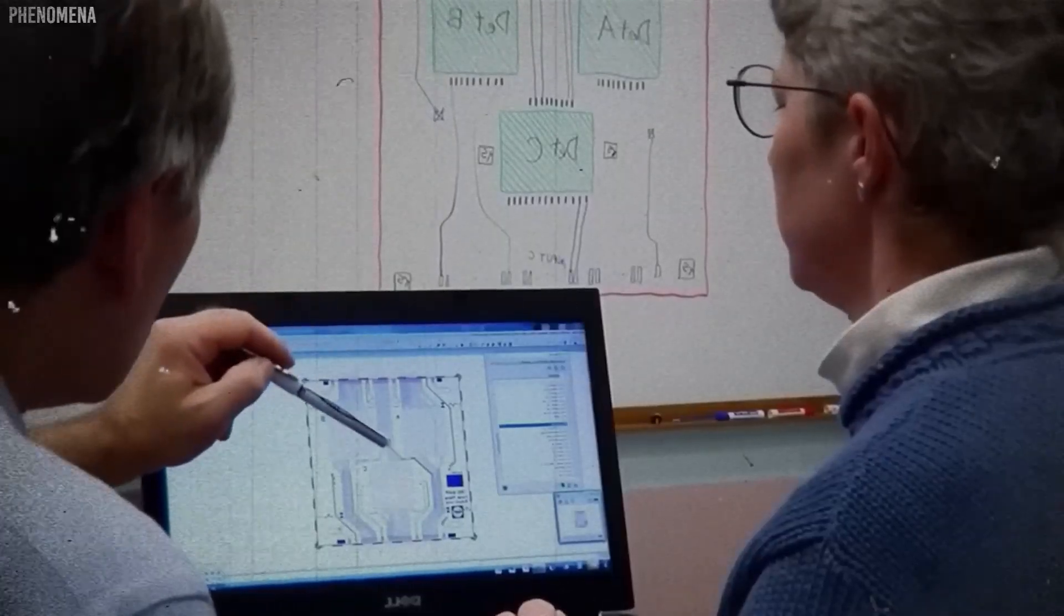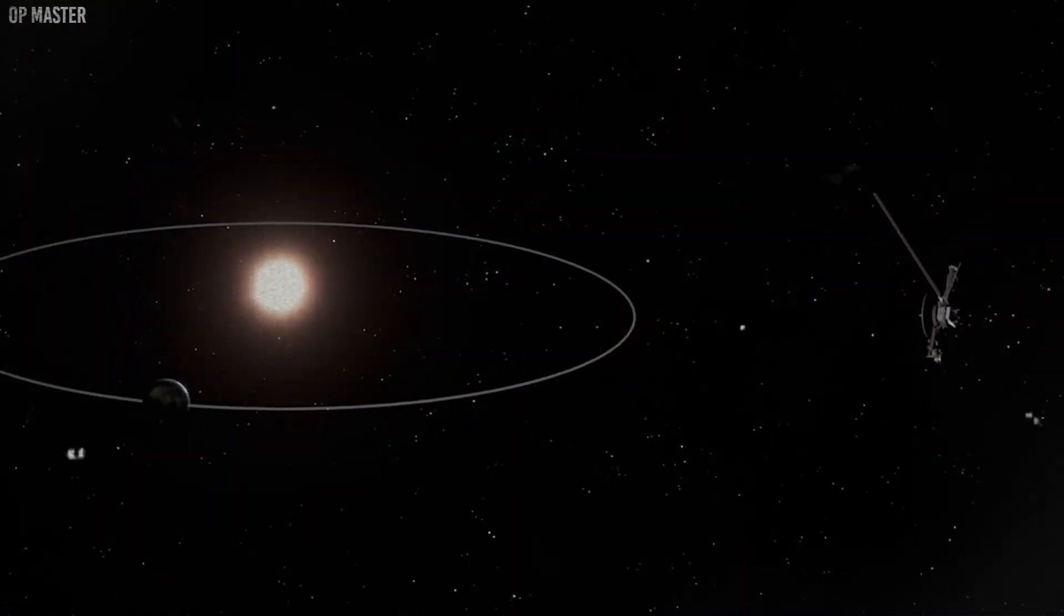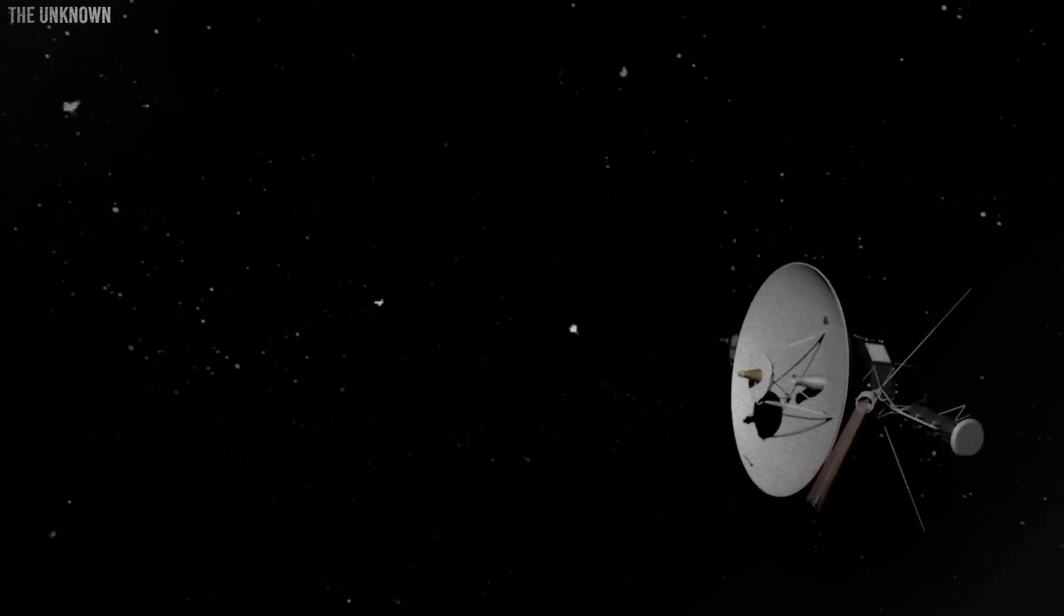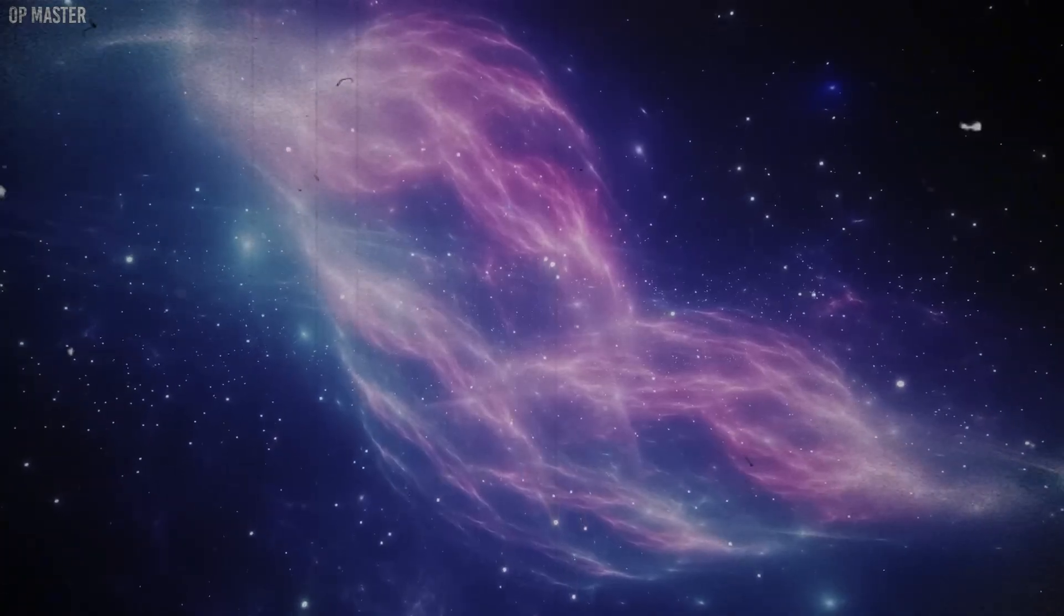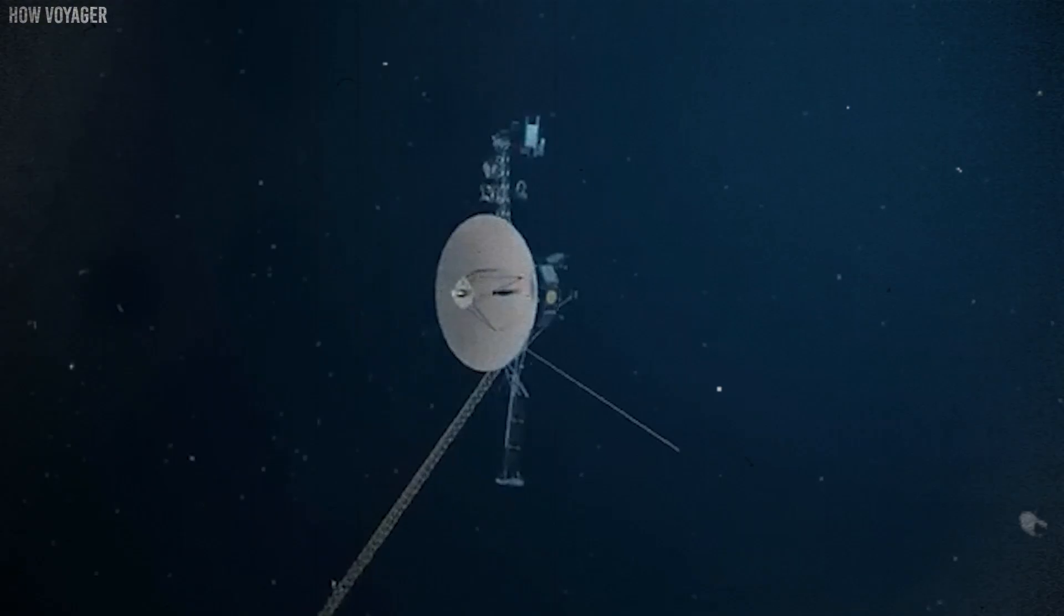Transmitting and running instruments also requires power. Voyager does not use solar panels because the sun is too faint at such great distances. Instead, it uses nuclear power radioisotope thermoelectric generators, which convert the heat from decaying plutonium into electricity.